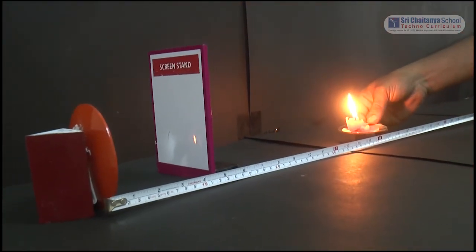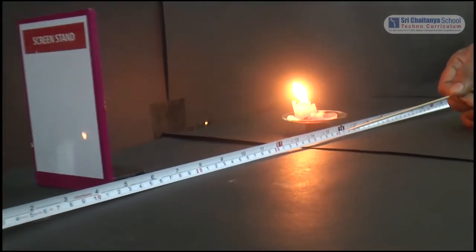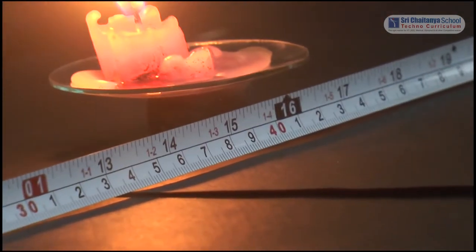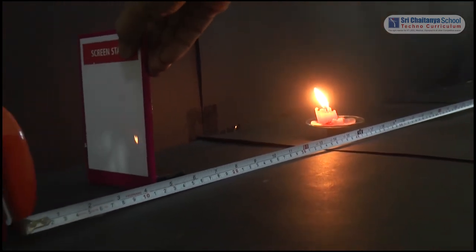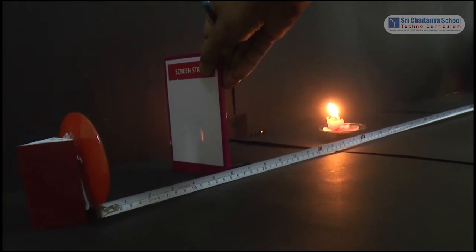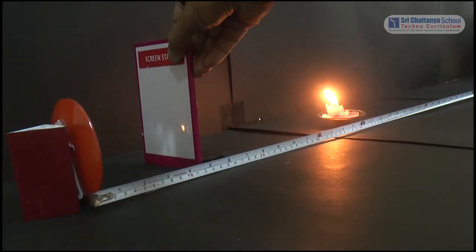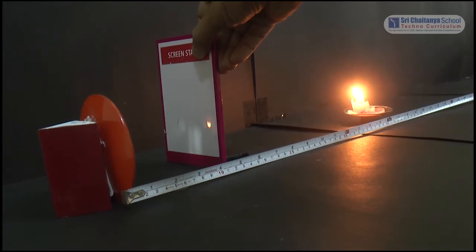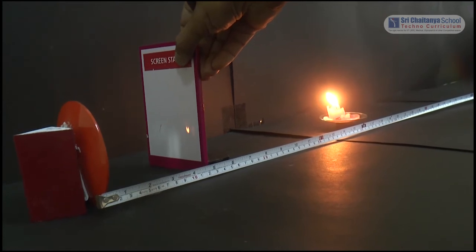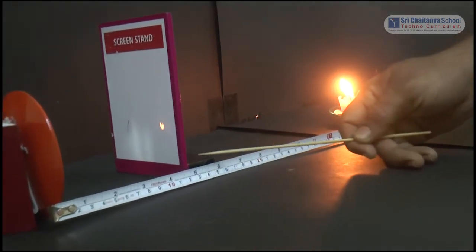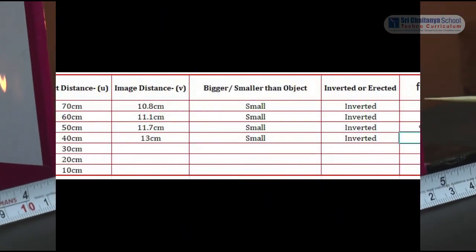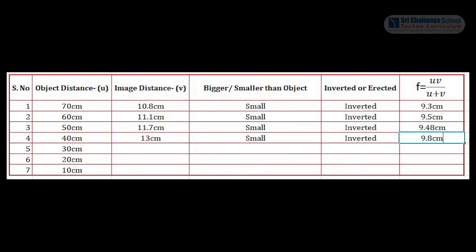Now place the object a little forward, at the 40 cm mark. We have to trace the image on the screen. We need to get a sharp image, so we adjust the screen back and forth. When you get a sharp image on the screen, stop and measure the distance from the mirror. In this case, the image distance is at 13 cm. Object distance 40 cm, image distance 13 cm, and the focal length is 9.8 cm.